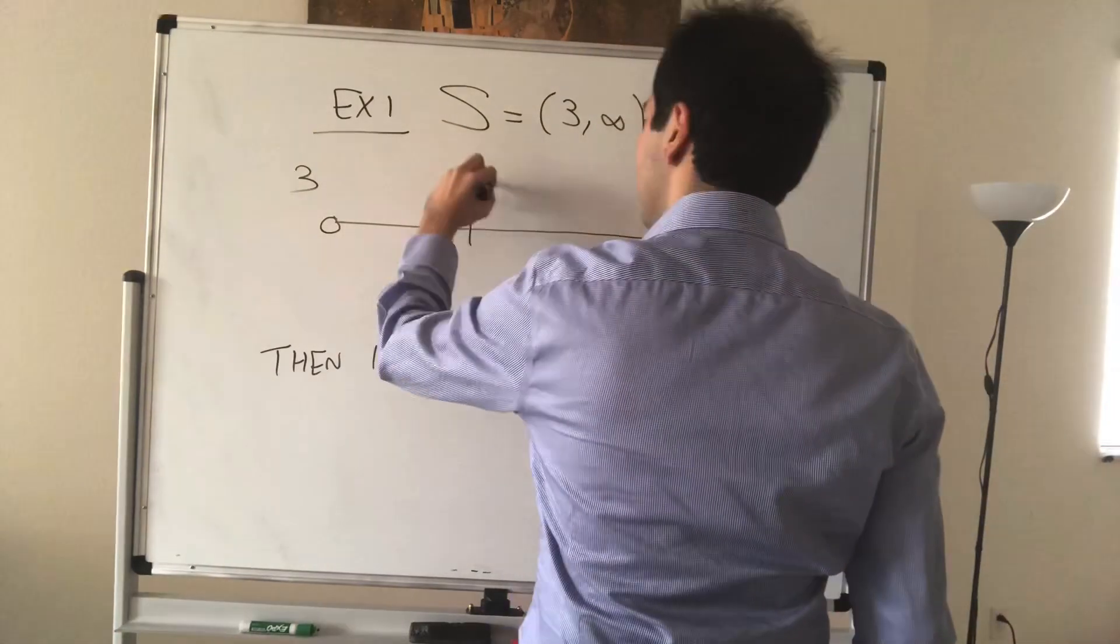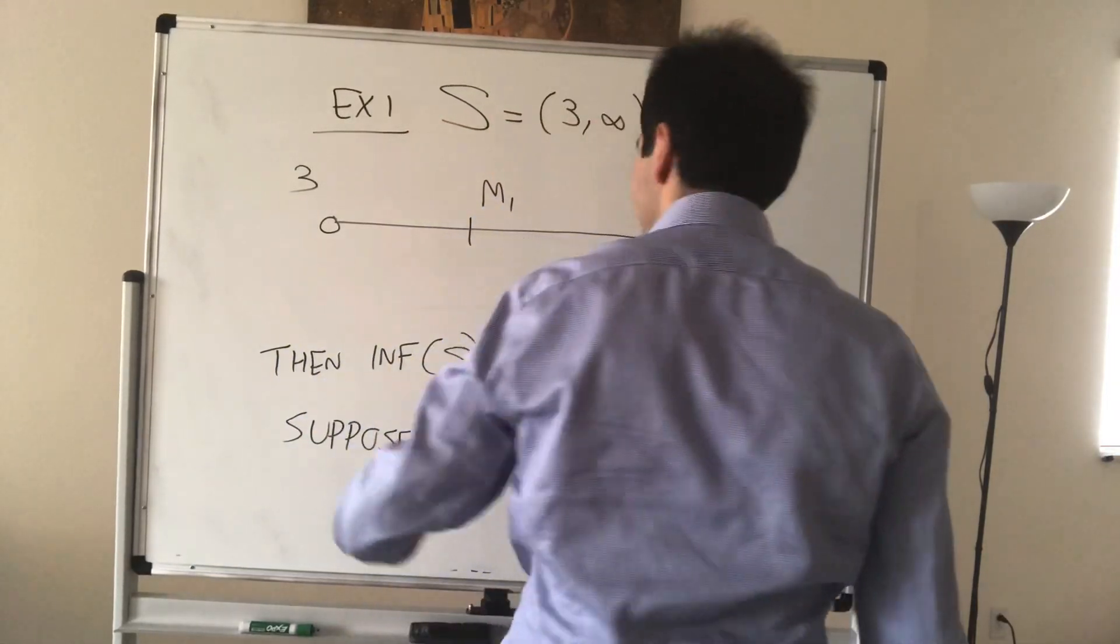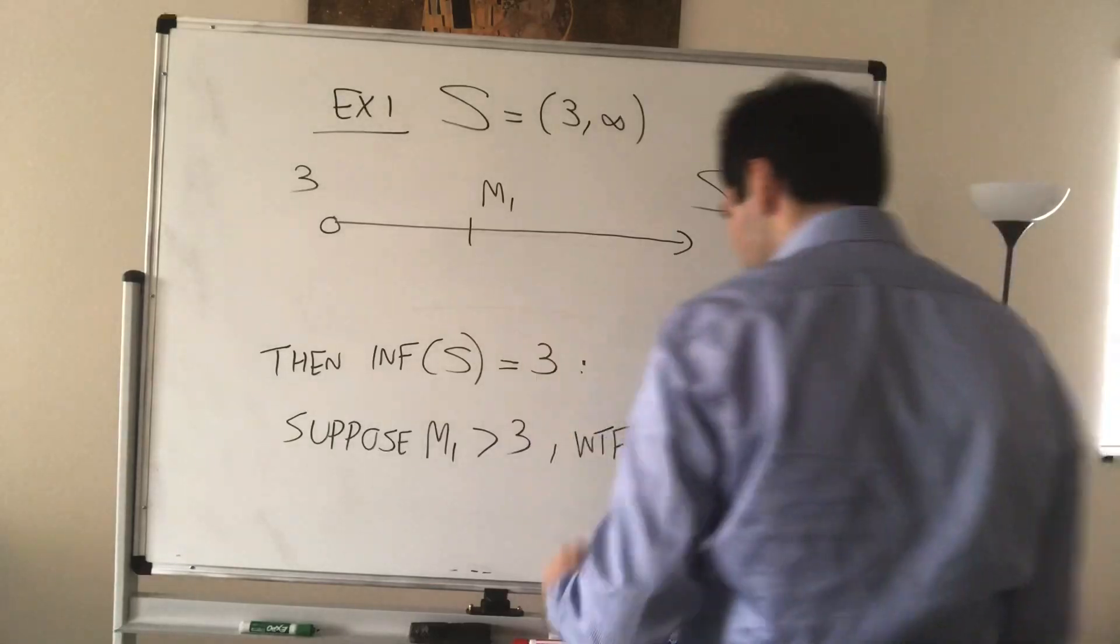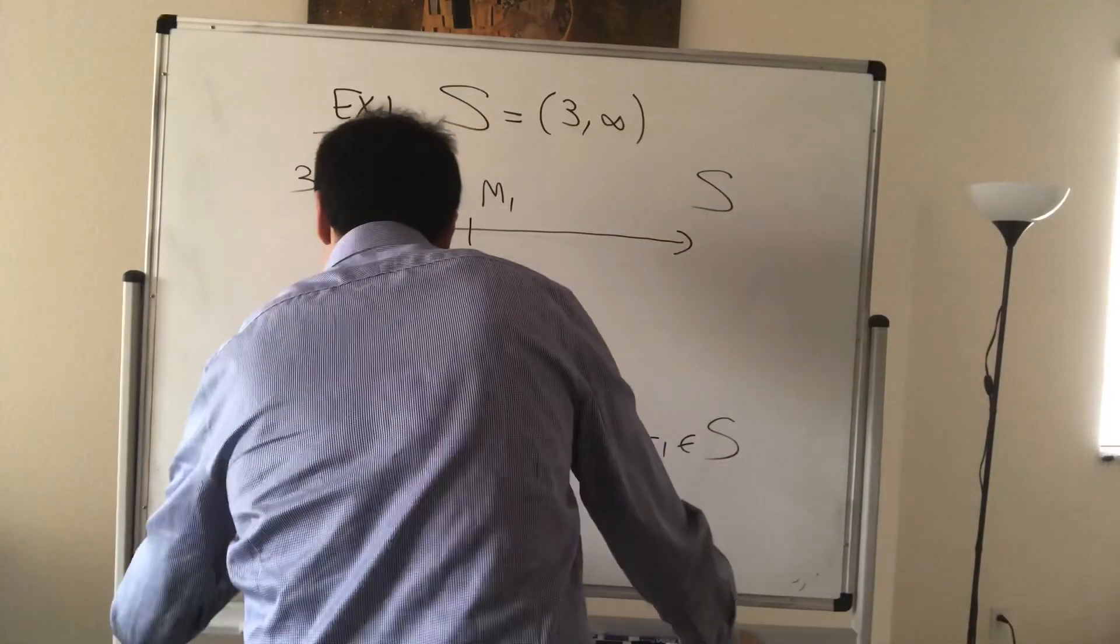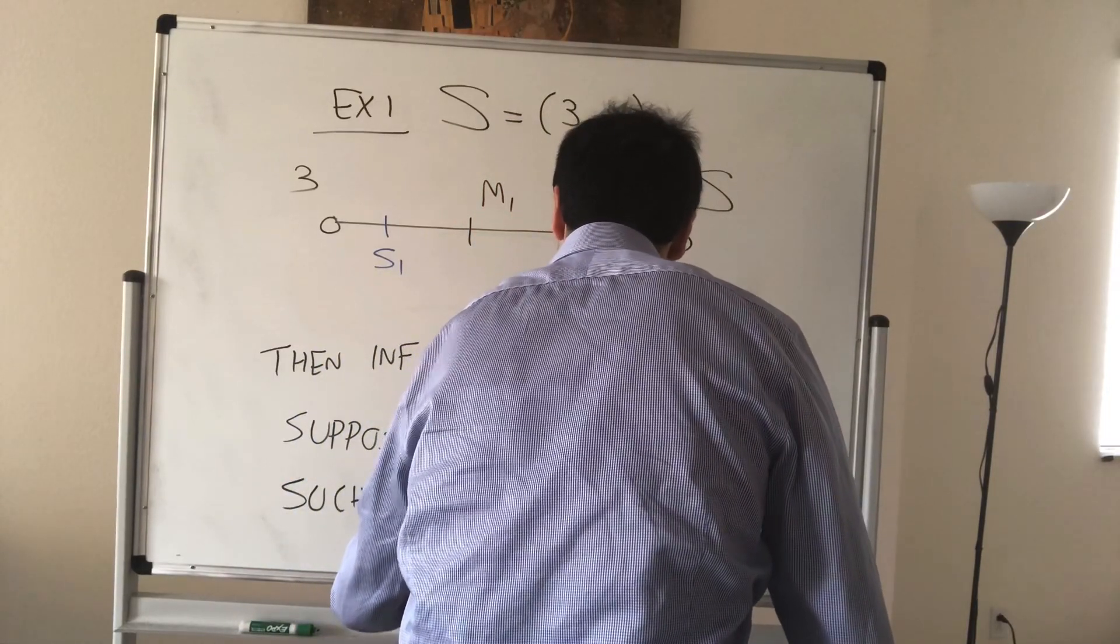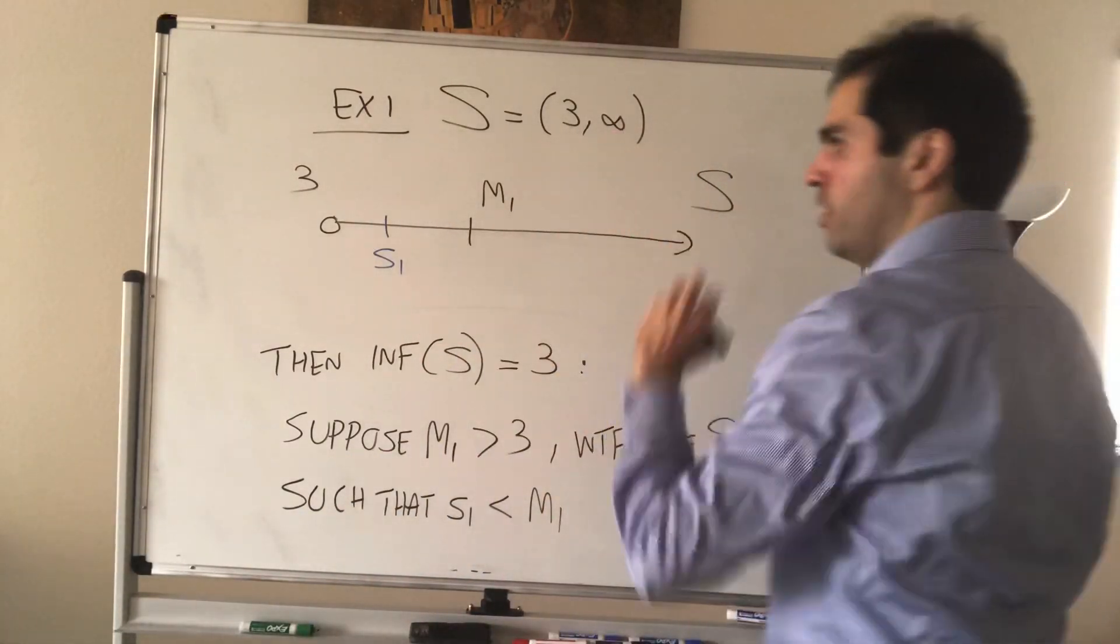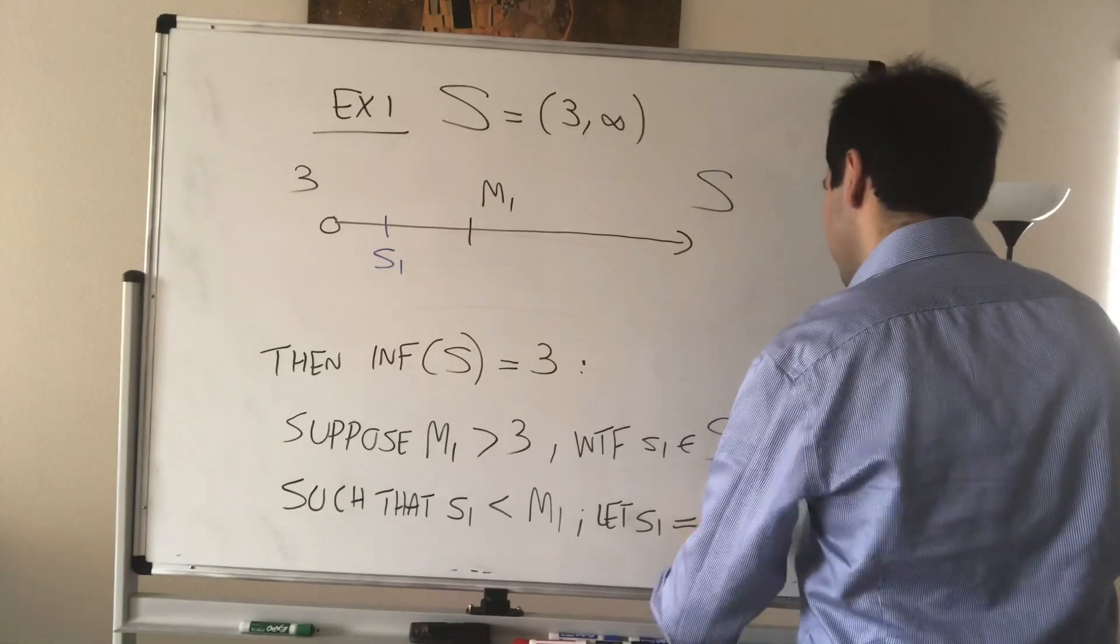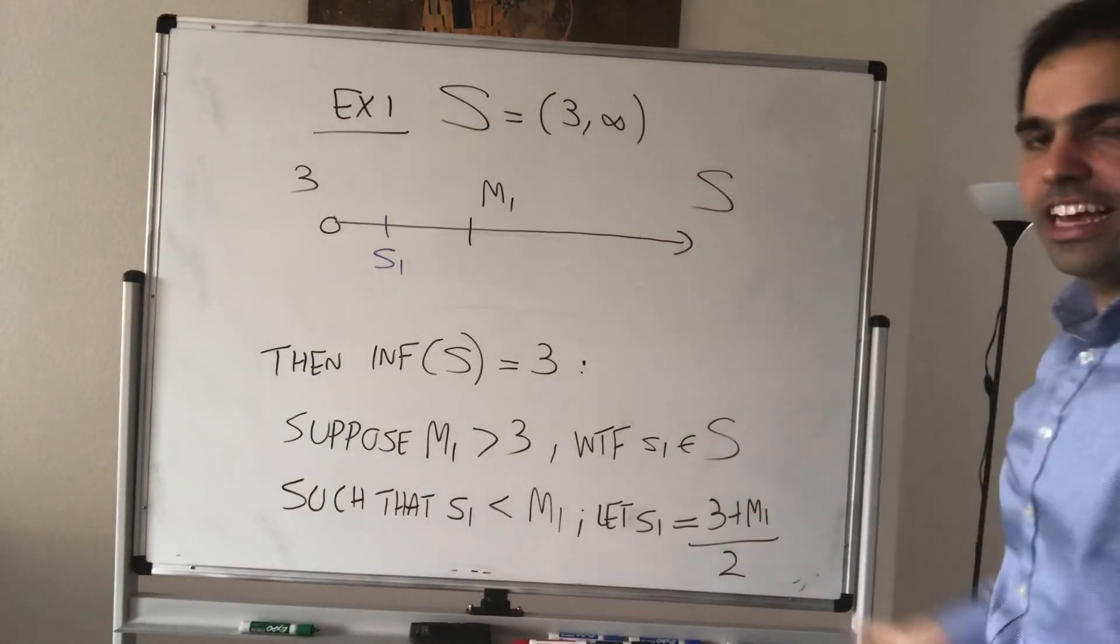And also, suppose M1, M1 is strictly greater than 3, and what we want to do, we want to find S1 in S that is smaller than M1. Such that S1 is smaller than M1, but if you want, just choose S1 to be the midpoint, and that does the trick.